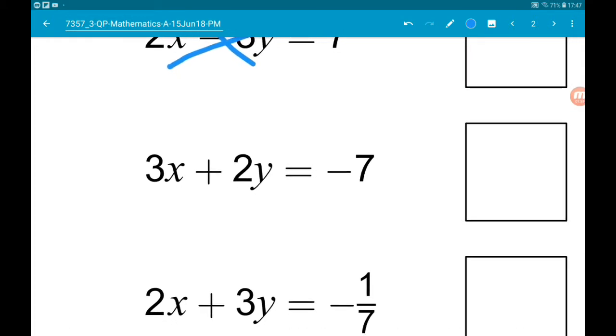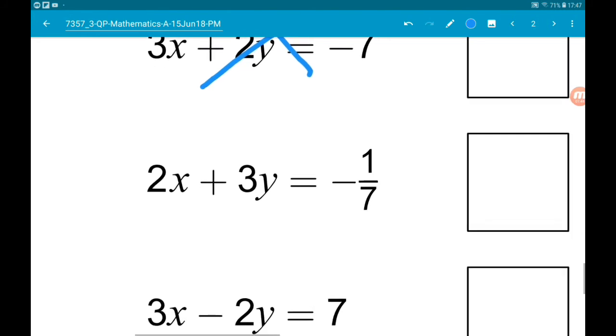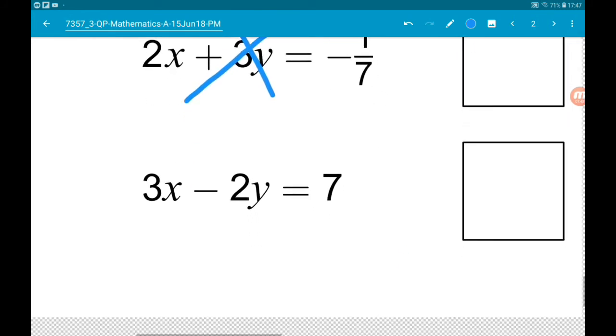It's not going to be this guy because we would get a minus 3x. It's not going to be this guy because we got a 2 on the x. It must be this guy then.